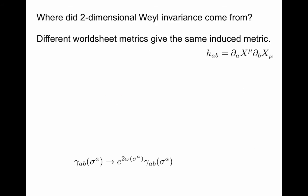Now where did this two-dimensional Weyl invariance come from? Different worldsheet metrics give the same induced metric. That's the reason. So Nambu-Goto had no gamma. If you change gamma, it doesn't notice. So this is an entirely new symmetry that came from introducing this new worldsheet metric.